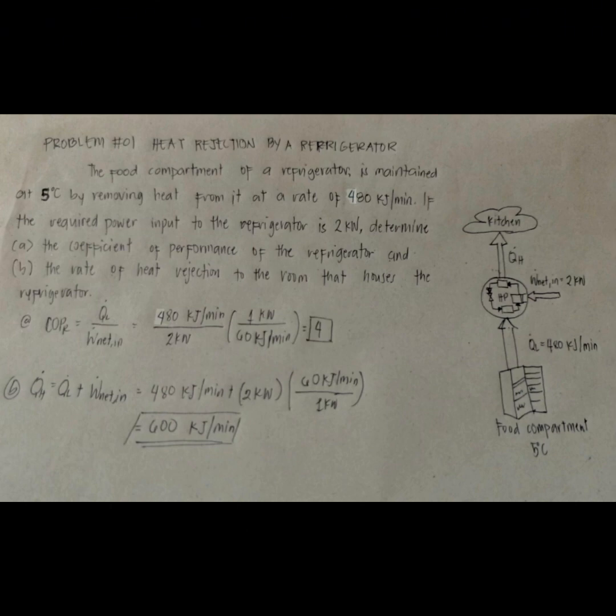Part B: The rate at which heat is rejected to the room that houses the refrigerator is determined from the conservation of energy relation for cyclic devices. Q_H equals Q_L plus W_net_input.